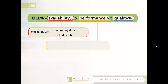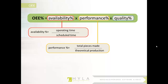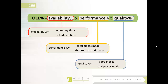The second metric is performance — that's your throughput. Performance is your total pieces made over your theoretical production: the actual values coming out of the machines or off the line versus what your machine or line should be producing. The last piece is quality, and a lot of times when working with clients, we find that when doing OEE calculations they're just assuming quality is 100% because they're not able to capture what the good pieces are versus the total pieces coming out of the line. Without those three factors together, you won't get an accurate OEE value.